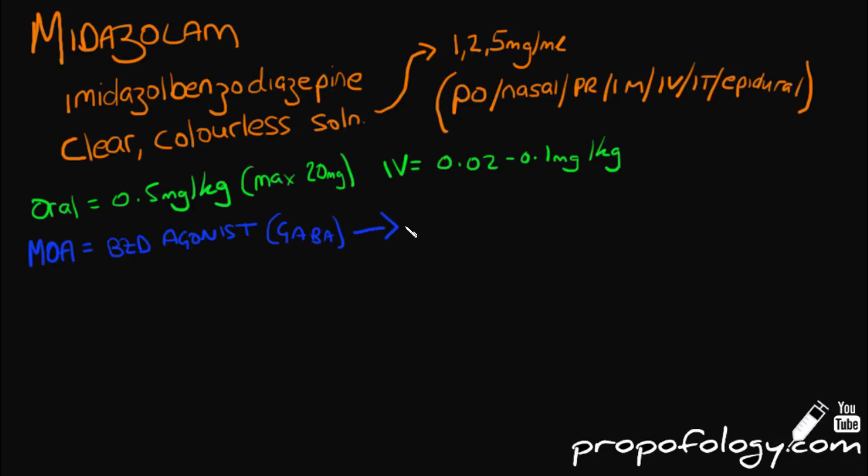Its mechanism of action is that it's an agonist at the benzodiazepine receptor, which is coupled to a GABA receptor. Stimulation of this causes increased frequency of opening of the GABA chloride ion channel, and this causes hyperpolarization of the membrane by increasing the flux of chloride ions into the cell.